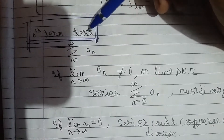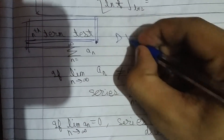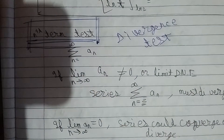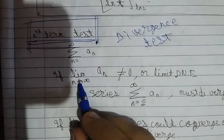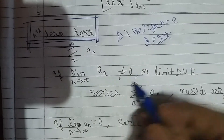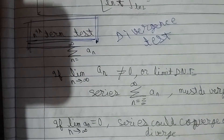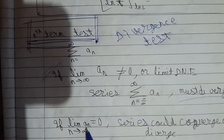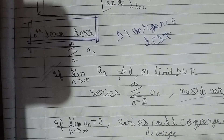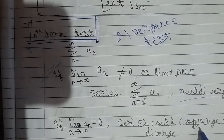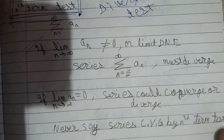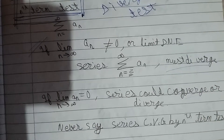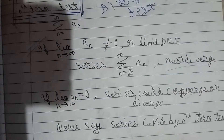Here we are covering the n-th term test, also called the divergence test. If the limit as n tends to infinity of a_n is not equal to 0, or the limit does not exist, then the series must diverge. Note that if the limit of a_n equals 0, the series could either diverge or converge — we can't say definitively in that case.